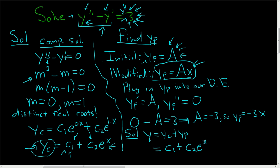Plus y sub p. And we said y sub p was negative 3x, so negative 3x. So that is the solution to our differential equation.